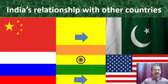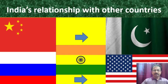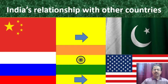India has a very good relationship with many countries. It has good relations with neighboring countries like Sri Lanka, Bangladesh, Pakistan, and China. At the same time, it has very good relationship with powerful countries like Russia and America too. India is adjusting its policies with the world powers, maintaining relationships with both immediate neighboring and powerful countries.